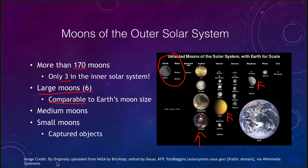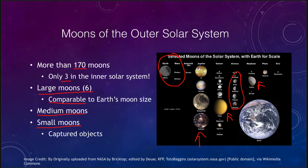There are also medium-sized moons. Uranus does not have any large moons but does have a group of medium-sized moons, and there are some other medium-sized moons around Saturn and Jupiter as well. There are also small moons — very tiny things which are generally captured objects — and those make up a good percentage of the 170 moons we know of. These larger planets have had more debris around them and more chances to capture some moons.